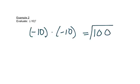So this asks us to evaluate this in problem two. Remember this means negative ten times negative ten. Negative times a negative is a positive, and ten times ten is a hundred. So we get positive one hundred.